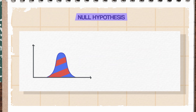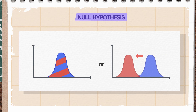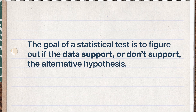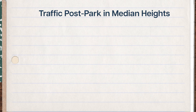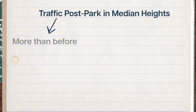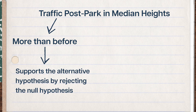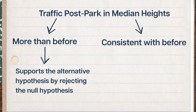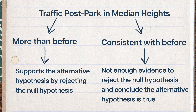Noah's null hypothesis is that traffic is either the same as before or that Median Heights has less traffic after the park was created. Basically, so long as the red curve winds up somewhere to the left of the blue curve, that would fit his null hypothesis that Median Heights does not have more traffic after the park was created. The goal of a statistical test is to figure out if the data support or don't support the alternative hypothesis. So in Noah's case, we have to see if the data tell us that traffic post-park in Median Heights is more than what it was before, which would support the alternative hypothesis and call the null hypothesis into question.